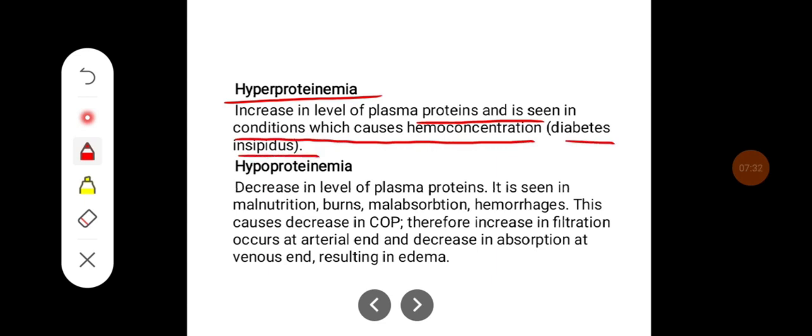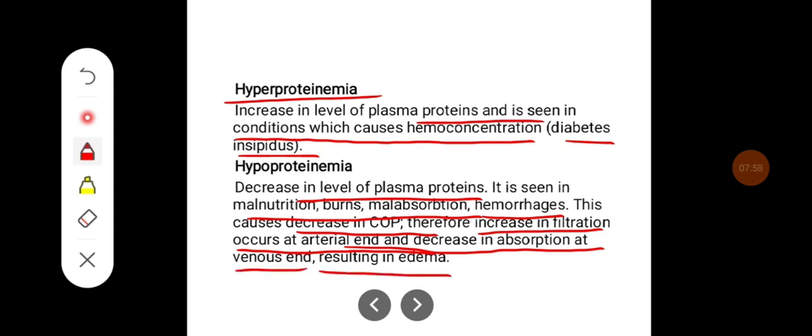Hypoproteinemia is a decrease in levels of plasma proteins, observed in malnutrition, burns, malabsorption, and hemorrhages. This causes a decrease in colloidal osmotic pressure, therefore increasing filtration. Increased filtration occurs at the arterial end and decreased absorption at the venous end, resulting in edema.